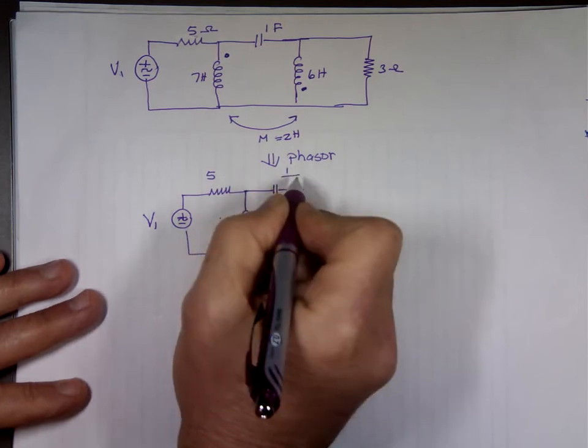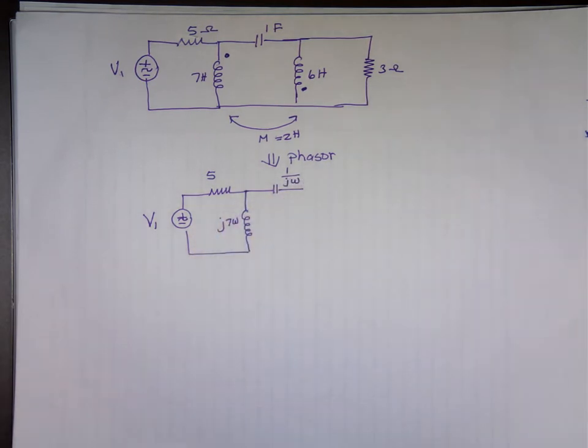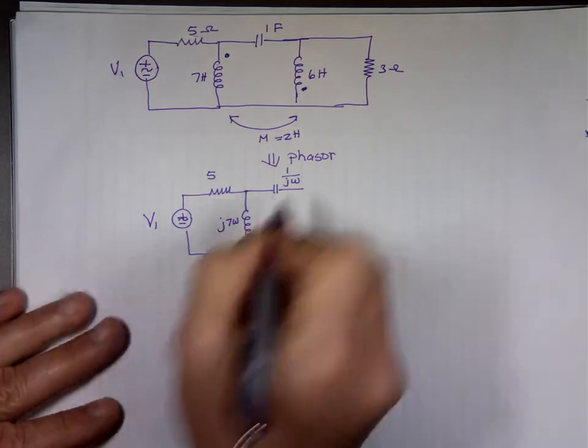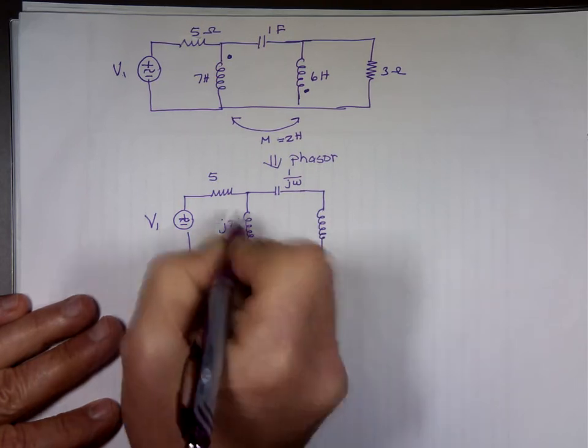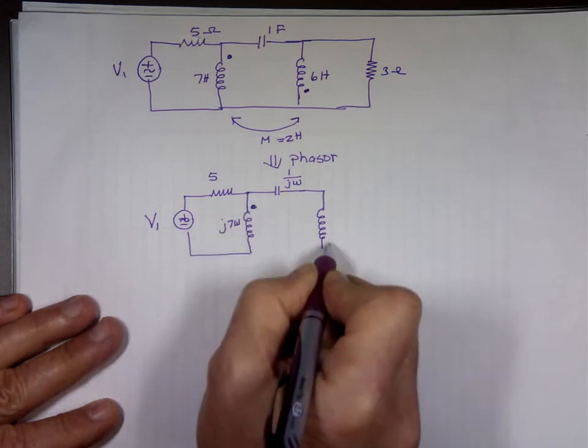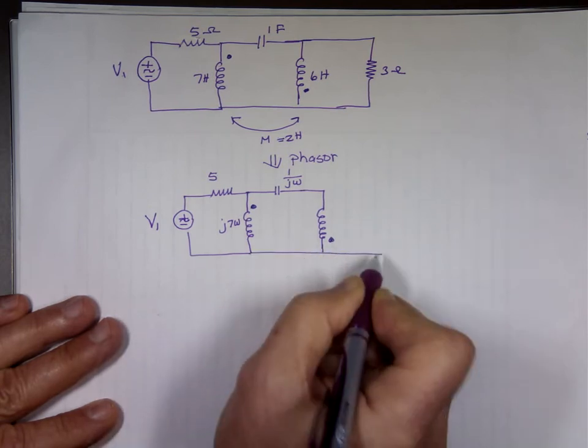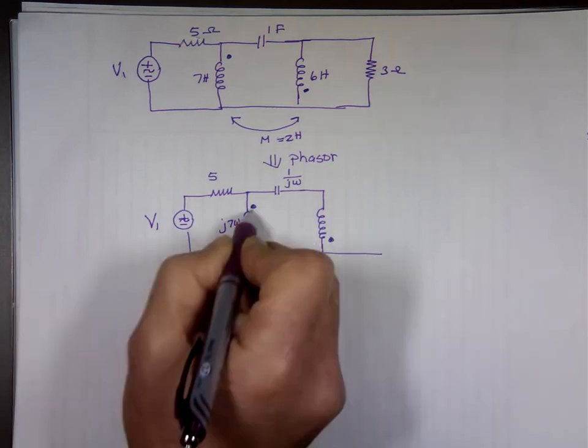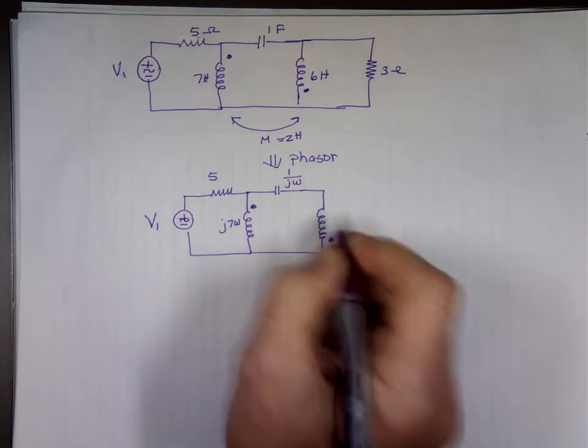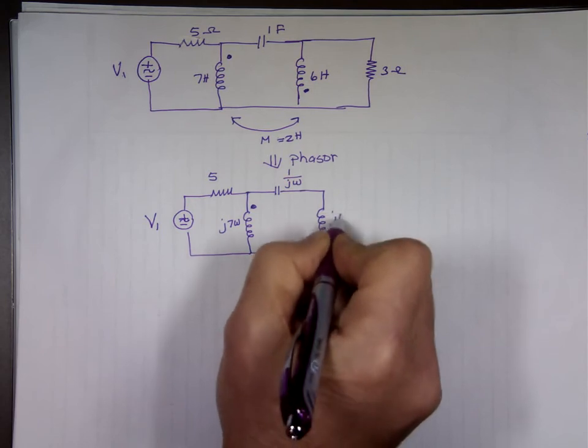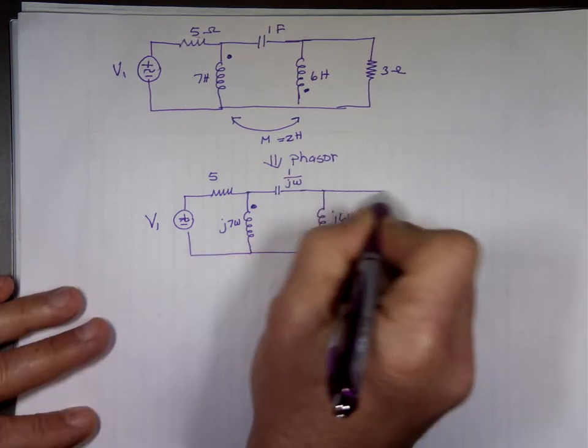This is 1 over jωC. 1 over jωC is 1. This inductor jωL, my dot is here, my dot is here. It doesn't matter which side you put the dot on. jωL is 6 here, so j6ω. And R is R.